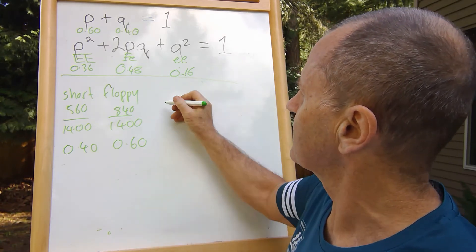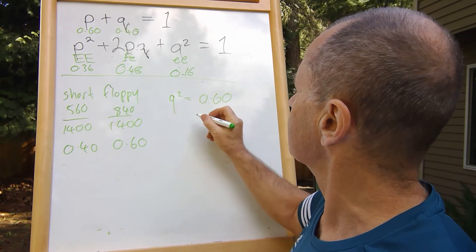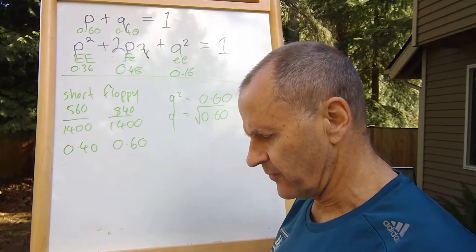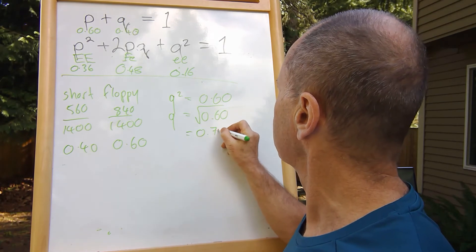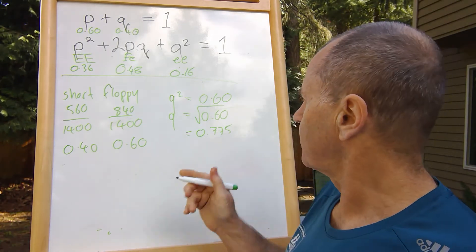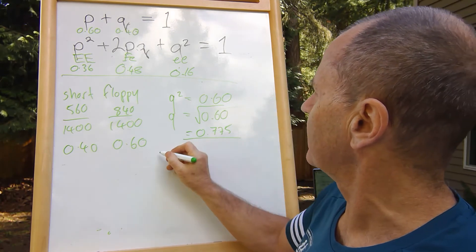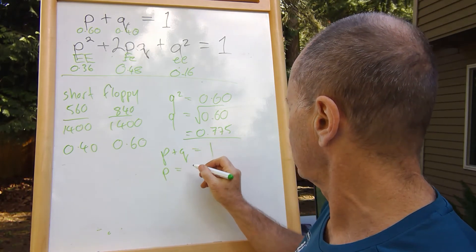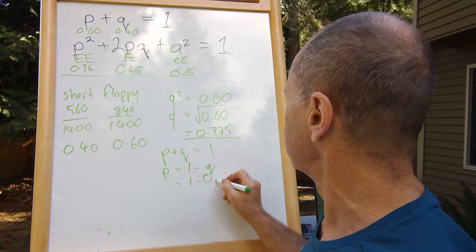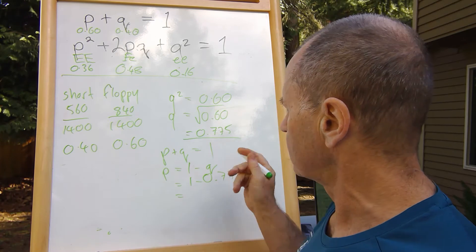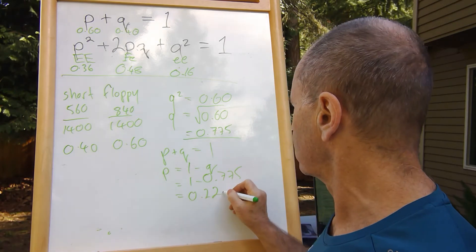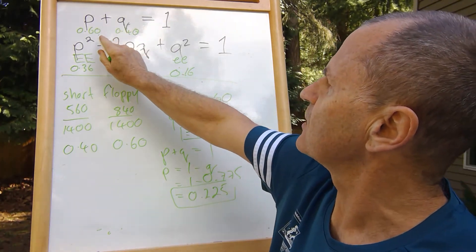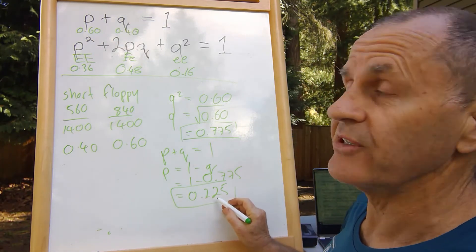With the floppy ears, q² equals 0.60, so q is the square root of 0.60, which is 0.775. To find p, because p plus q equals one, p equals one minus 0.775, which equals 0.225. So things have changed a great deal. Whereas p used to be 0.6, it is now 0.225, and q is now a lot more than it used to be.